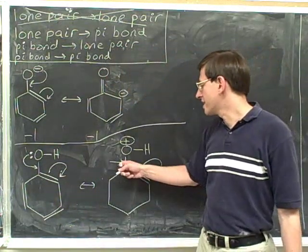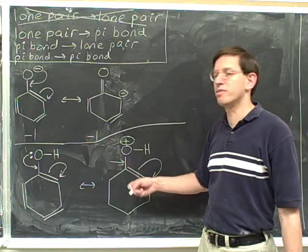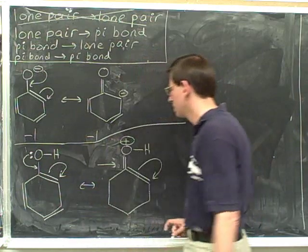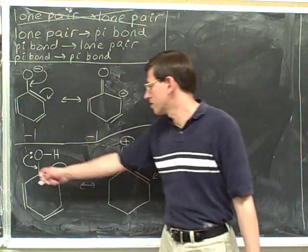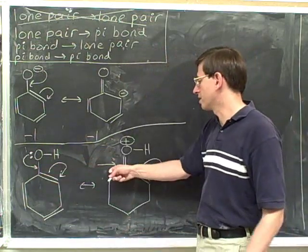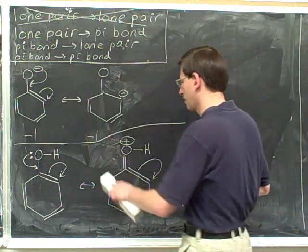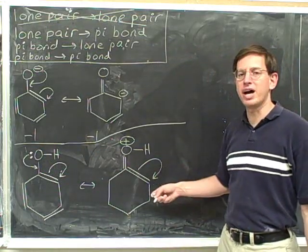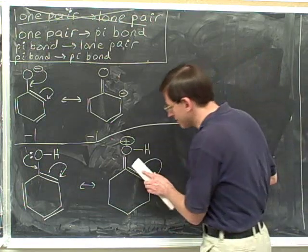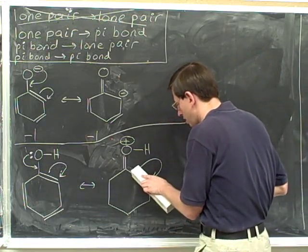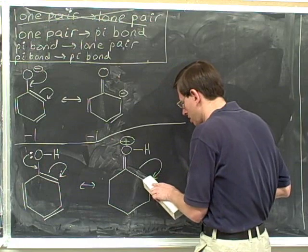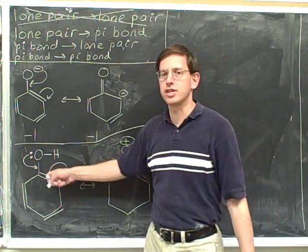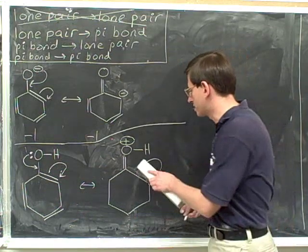Now we go to the next head. This head is indicating the formation of a pi bond, so we have to draw in that pi bond. We're in the middle of the string of arrows, so there's no need to change any charges. We can erase that tail. We go to the next tail — it indicates that we're moving the pi bond, so we can erase that pi bond. We're still in the middle of the arrows, so we don't change any charges. We can erase that tail.